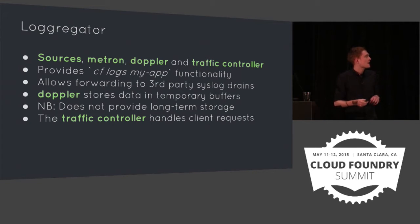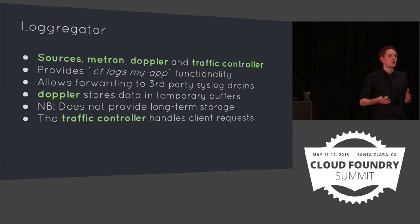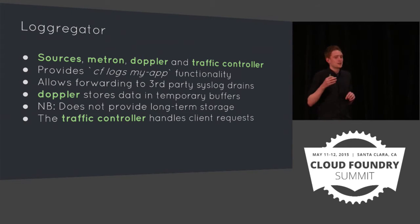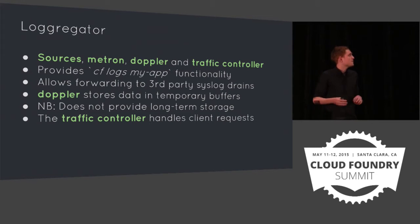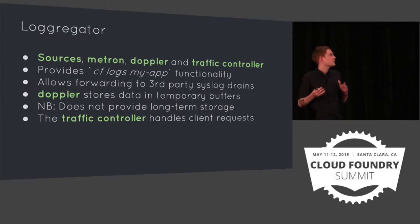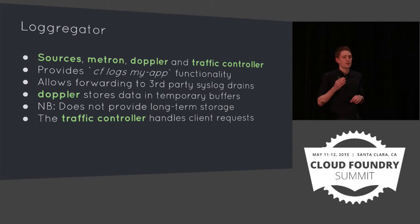The first component I'd like to talk about is Loggregator. Loggregator is really at the core of the Cloud Foundry logging and metrics system. It's currently comprised of a few smaller components — namely the sources, Metron, Doppler, and the Traffic Controller. To give a general overview: Loggregator allows developers to stream their application logs in real time down to the CLI, which can be achieved by running the CF logs my-app command. It also allows developers to dump a recent subset of their logs, and it can provide functionality for draining those logs off to third-party syslog drains.